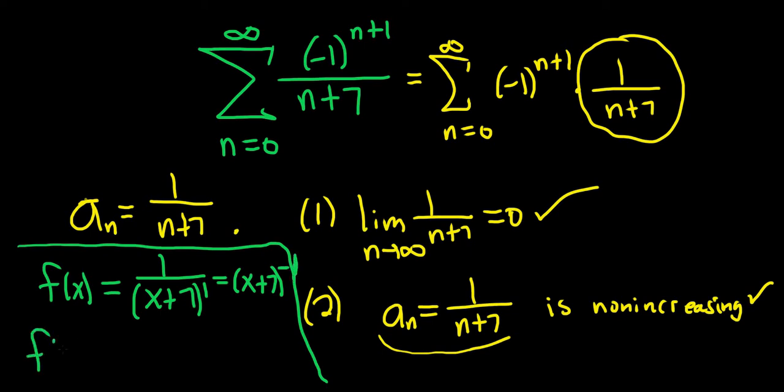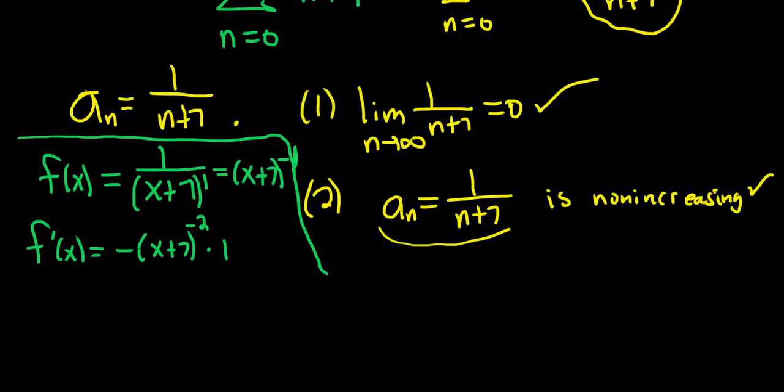Now you would take the derivative. So f prime of x. You bring the negative 1 down, so you would get x plus 7. Subtract 1, so you get negative 2, times the derivative of the inside, which is 1. So this is negative 1 over x plus 7 squared.